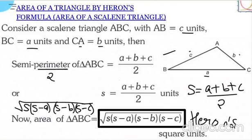Everything else I've taught and will teach is important, but the entire chapter is based on Heron's Formula. Just remember: area equals the square root of s into (s−a) into (s−b) into (s−c), where s is the semi-perimeter and a, b, c are the lengths of the three sides.